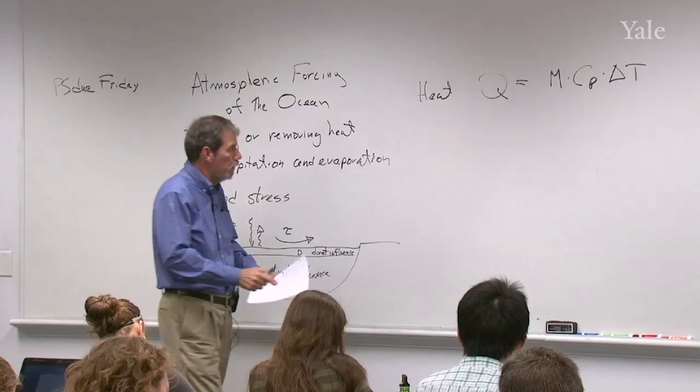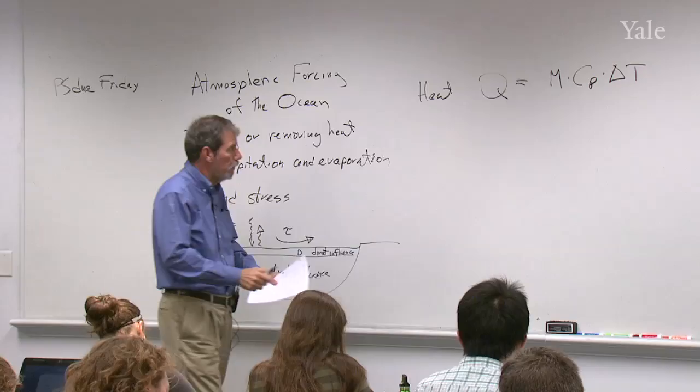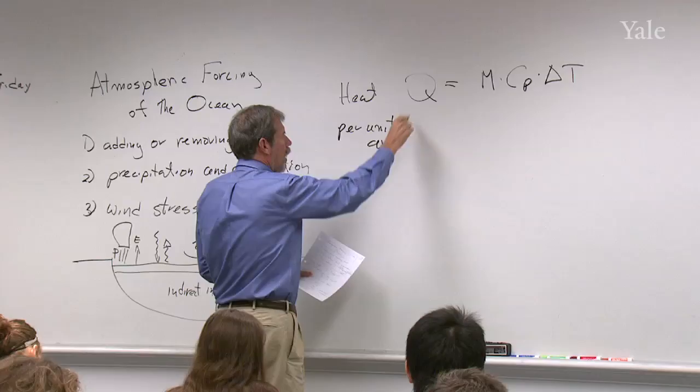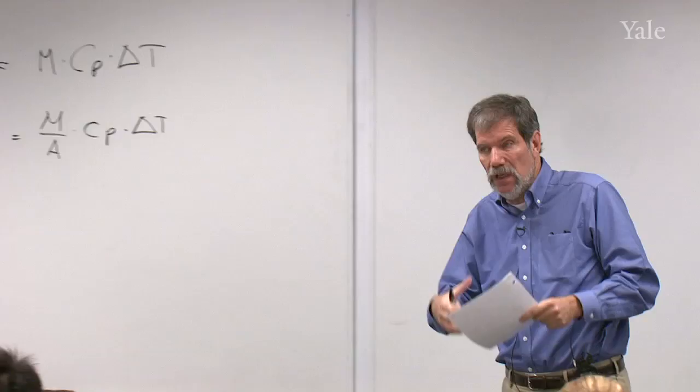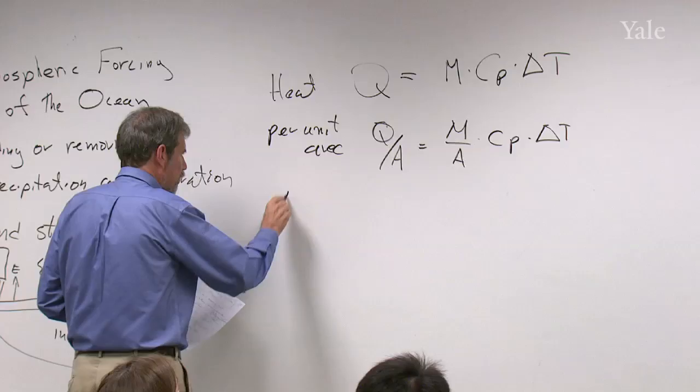If I write that in a per unit area basis, I'll divide the Q by A and the mass by A, and I'll leave everything else the same. I've just divided both sides through by the area that I'm considering, which in oceanography, we don't usually even consider that area. We just do these calculations on a per unit area basis.